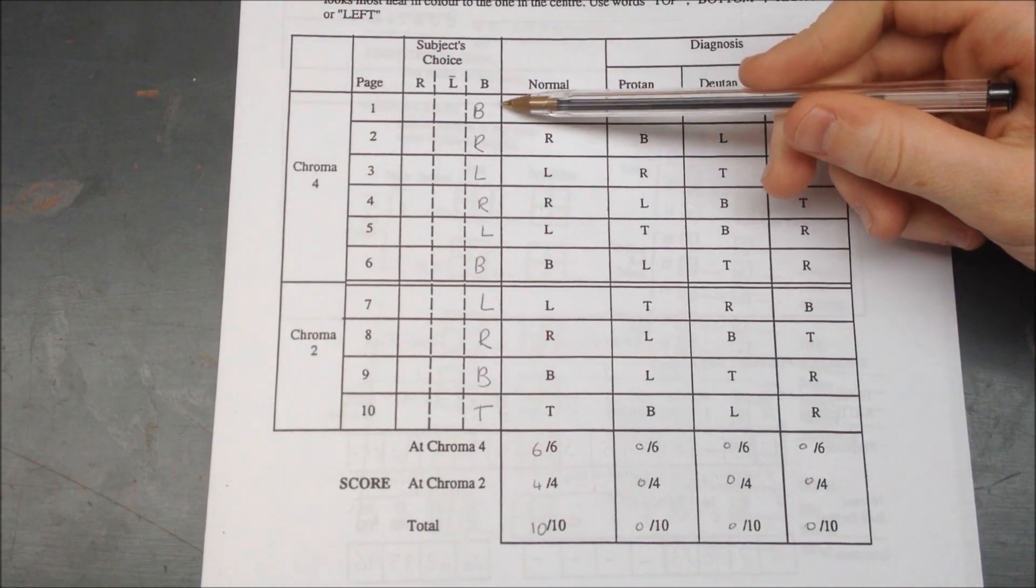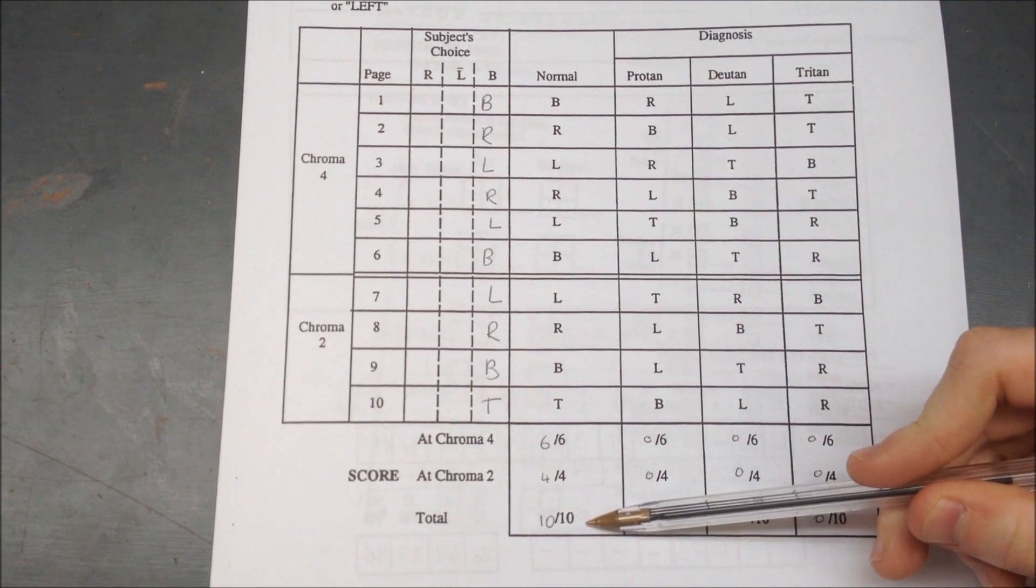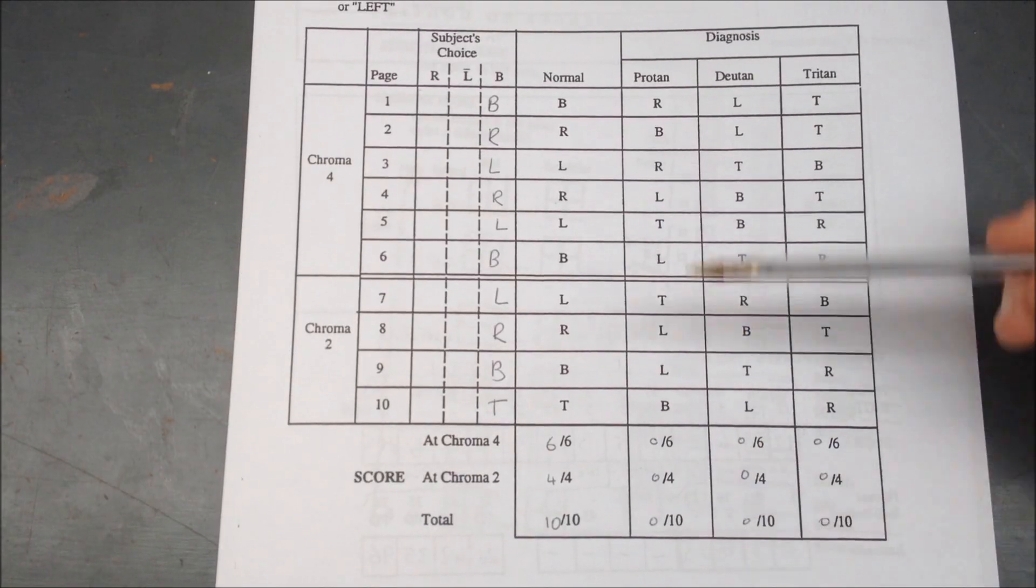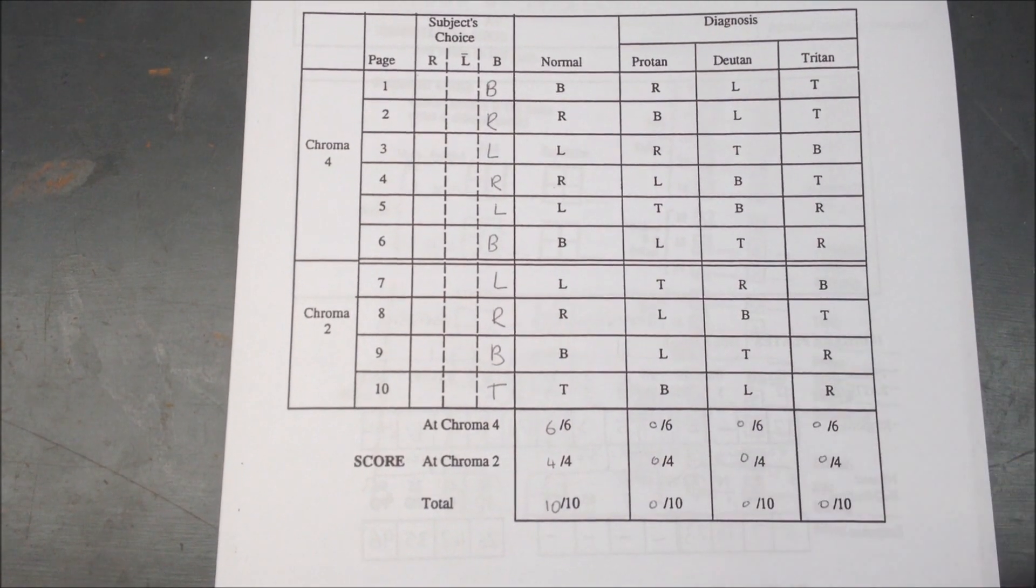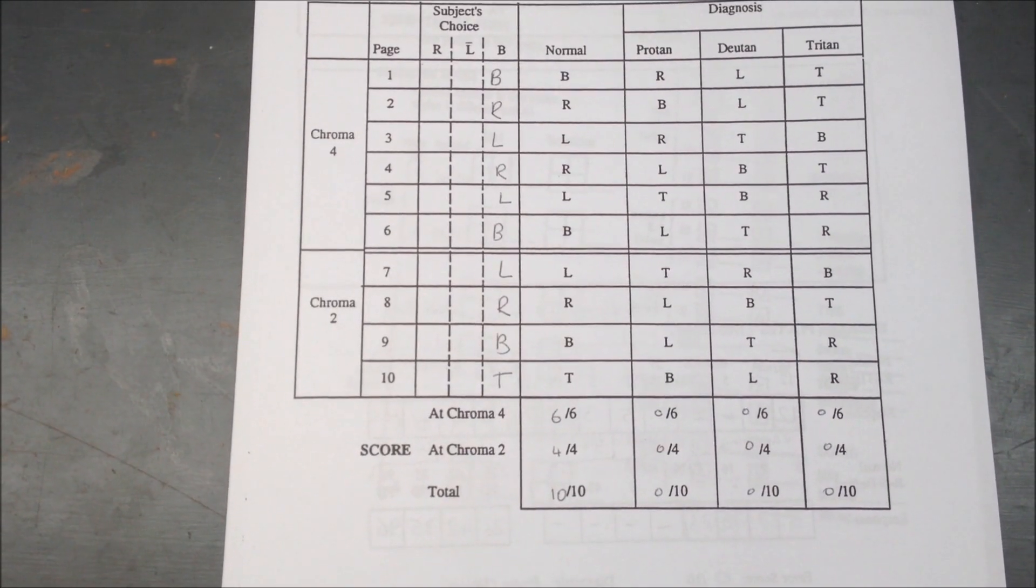So as you can see here, this is where you write Thomas's results, and he scored ten normal scores, and zero for Protan, Deutan and Tritan deficiencies, indicating that Thomas does not have a moderate or severe color deficiency.